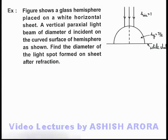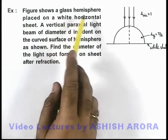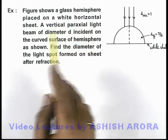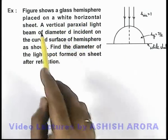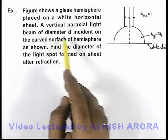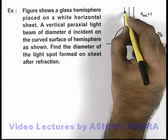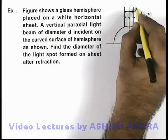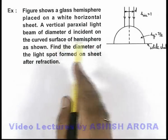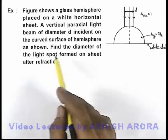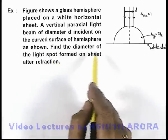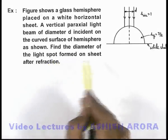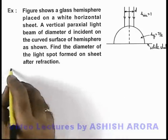In this example, we are given that the figure shows a glass hemisphere placed on a white horizontal sheet. A vertical paraxial light beam of diameter d is incident on the curved surface of the hemisphere as shown. We are required to find the diameter of the light spot formed on the sheet after refraction.